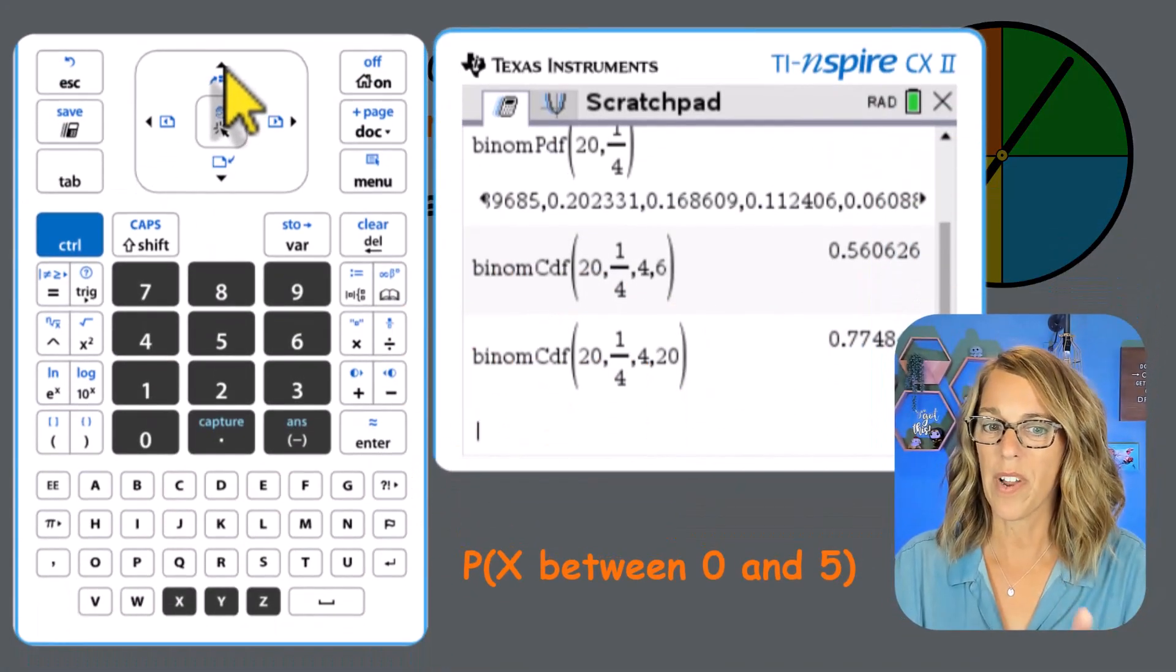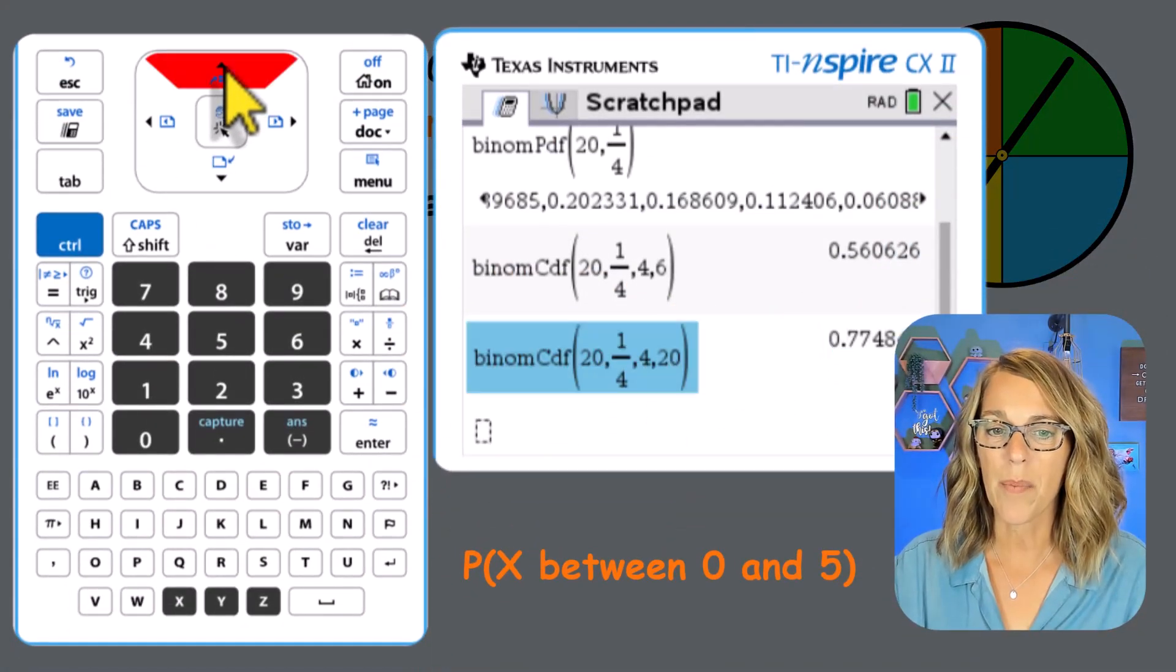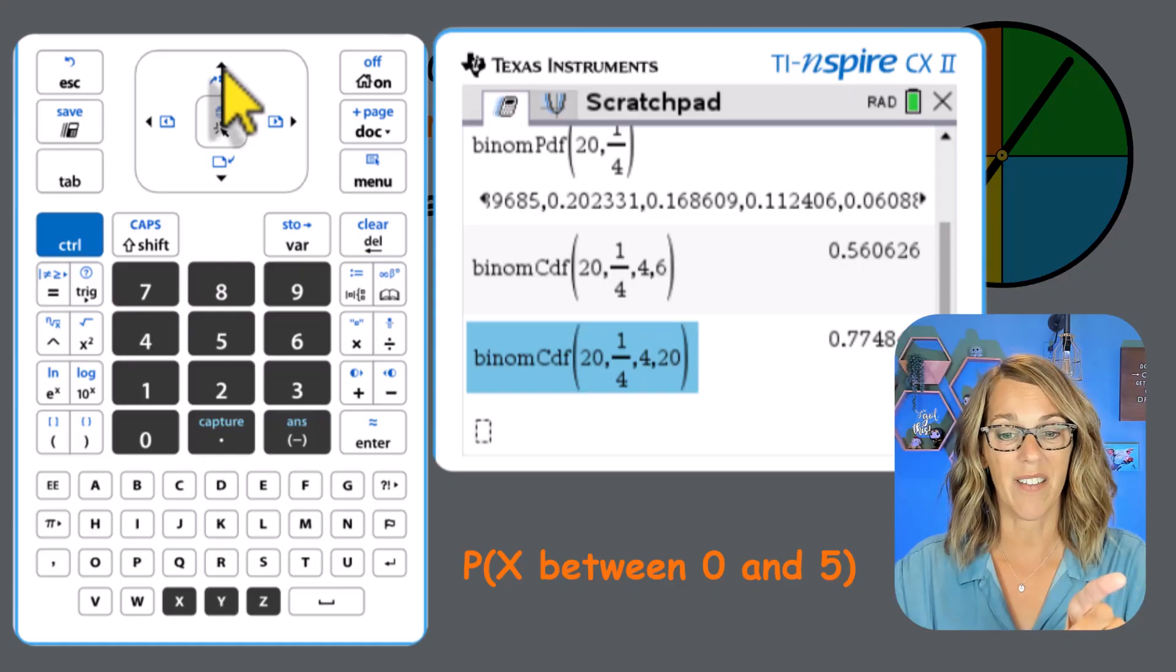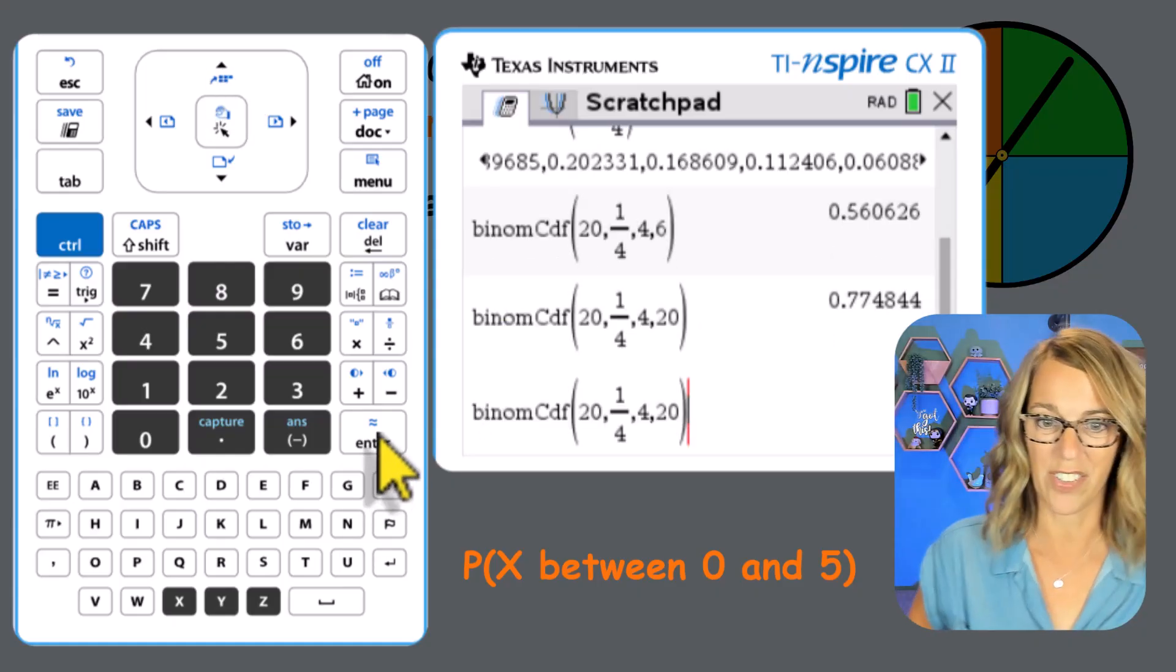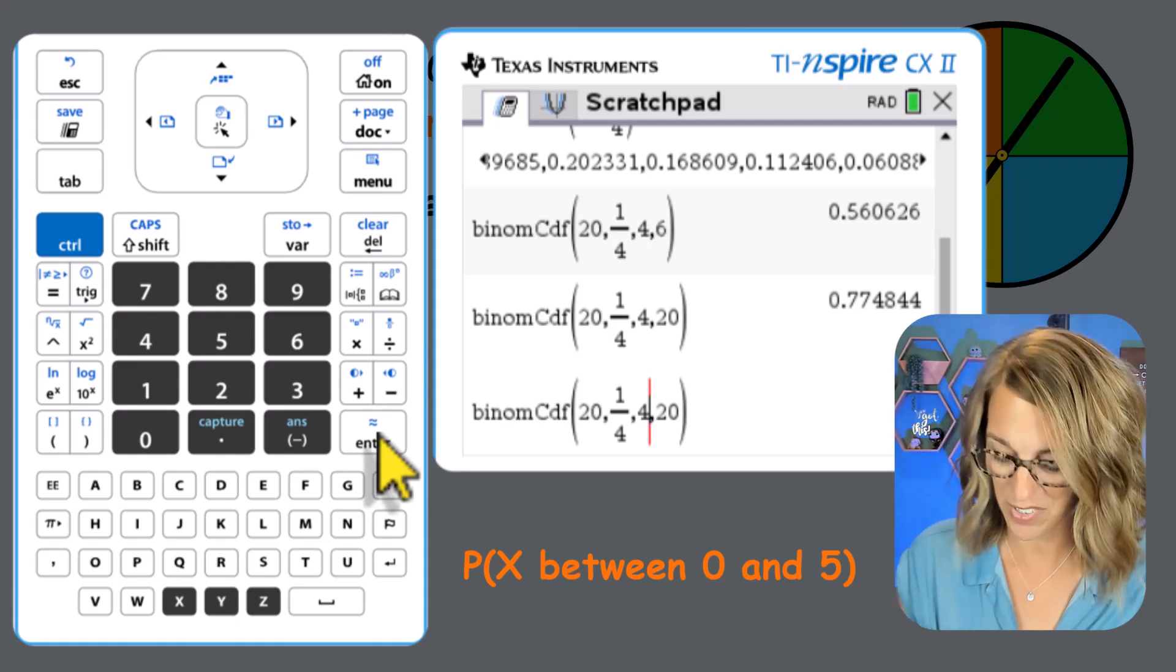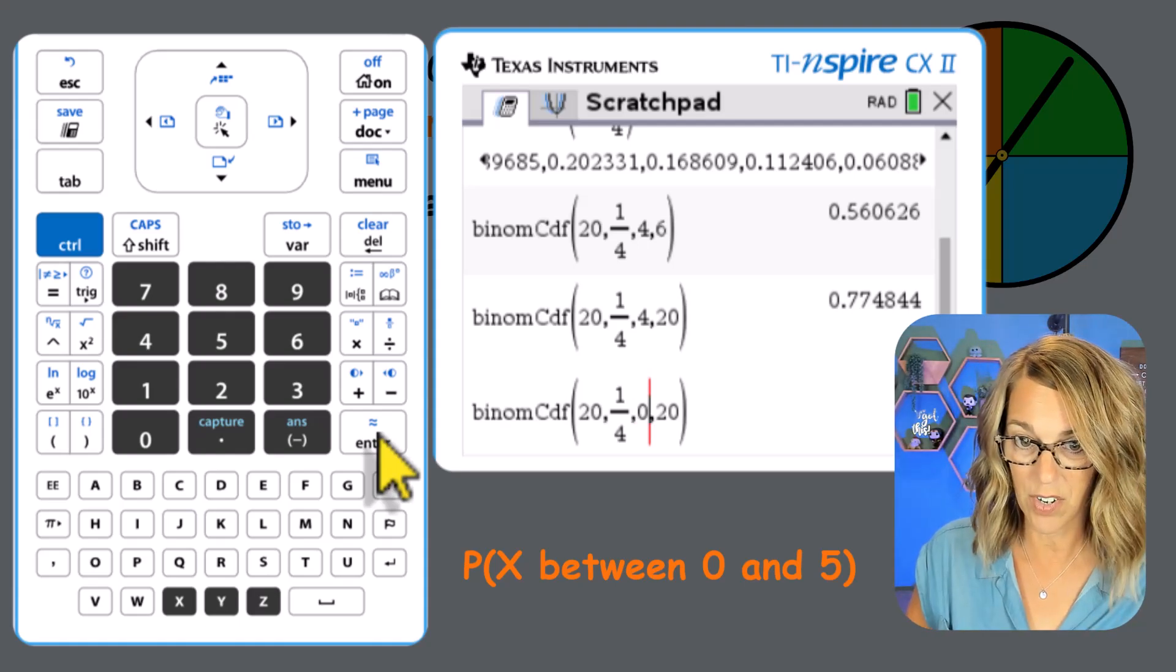So we just did between four and 20. I'm going to arrow up and I'm going to grab that binomial CDF that we just did. I'm going to hit enter once to get it there into my calculation screen. And let's just change these numbers.